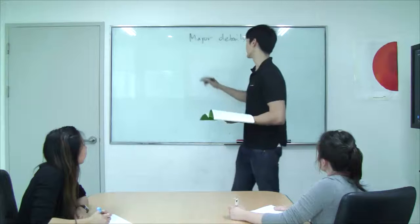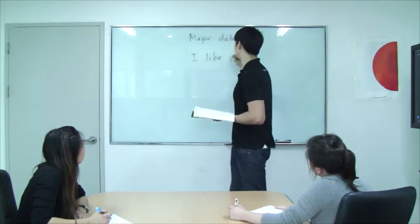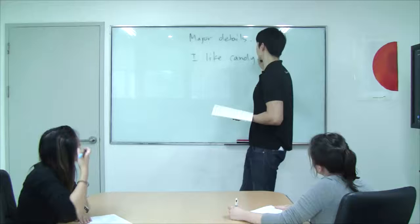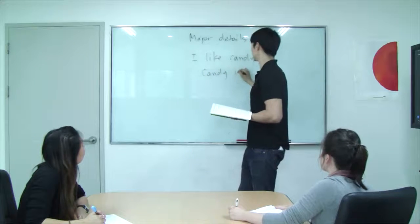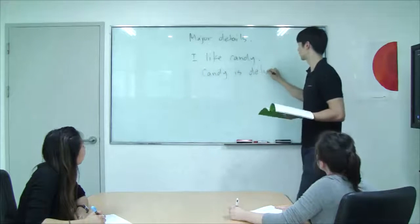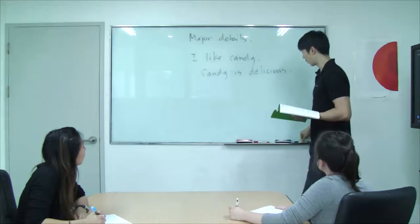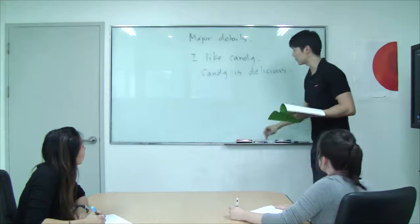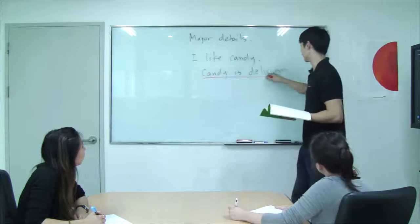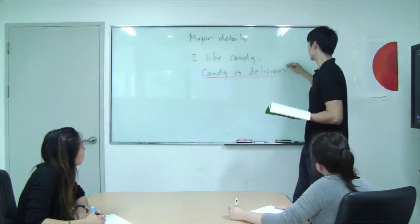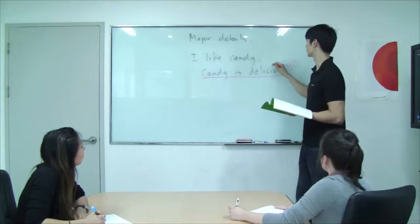So for example, if I said I like candy — candy is delicious — what is my major detail? Candy is delicious. And why is this my major detail? Because it shows why 'I like candy' is true.